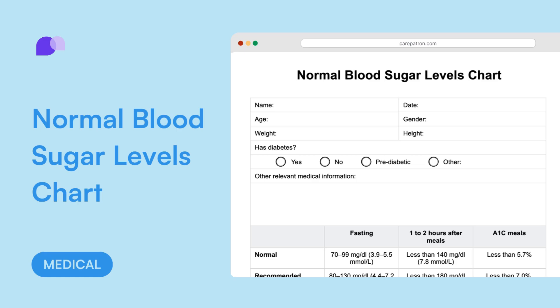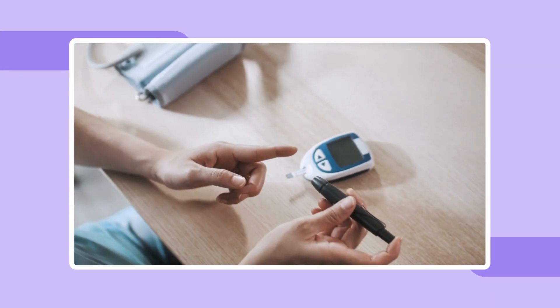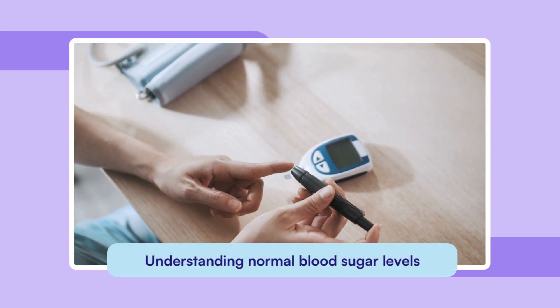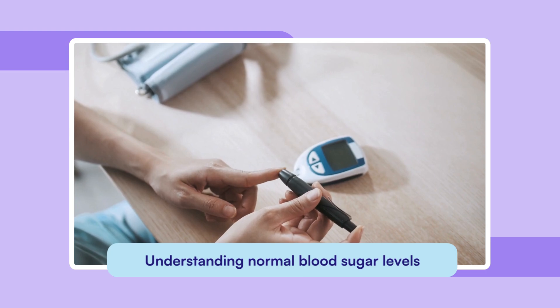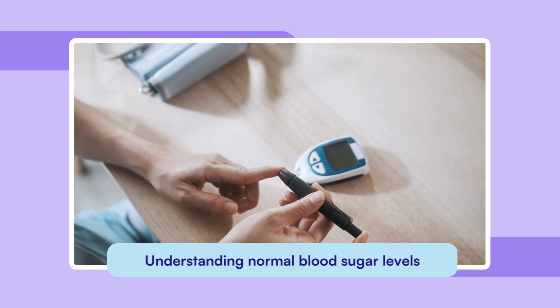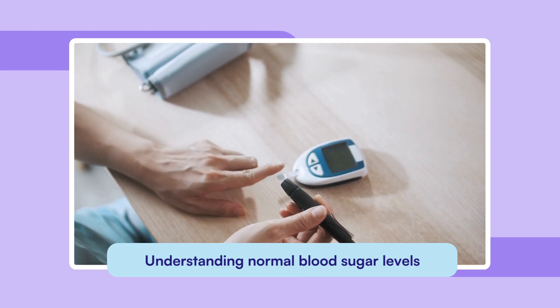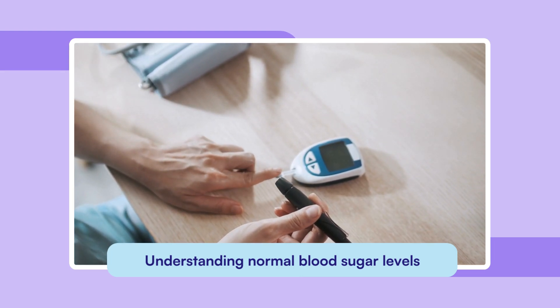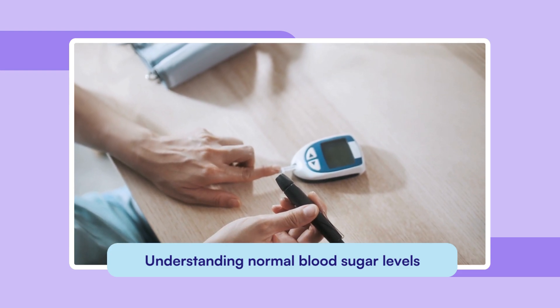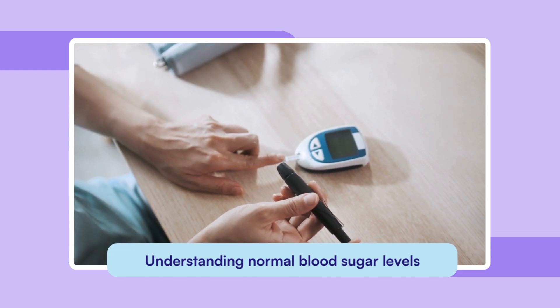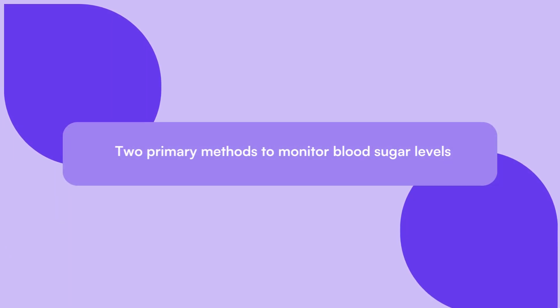Understanding normal blood sugar levels is crucial in managing health, especially for those with diabetes. These levels represent the optimal range of glucose in the bloodstream, which is necessary for proper bodily function. Keeping blood sugar within this healthy range is essential for preventing health complications and effectively managing diabetes.